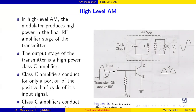When the positive cycle comes, the VBE junction is forward biased and the transistor starts conducting. The output is an amplified positive cycle, and the amplification factor depends on the collector. The collector current starts flowing during the positive cycle. When the negative cycle comes, VBE is reverse biased — no conduction — so collector current is zero.